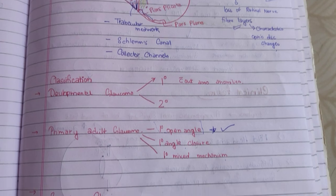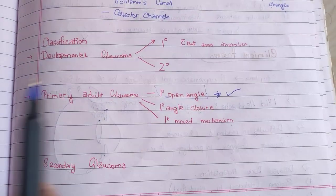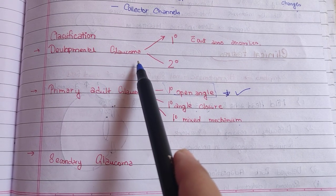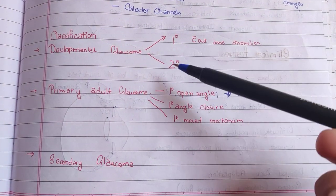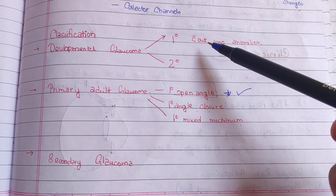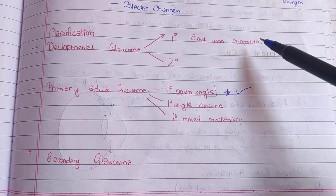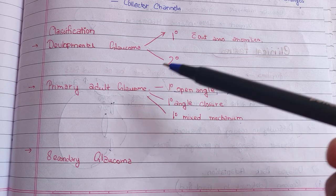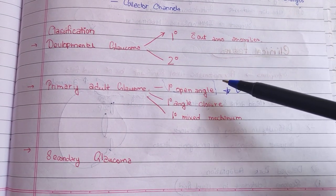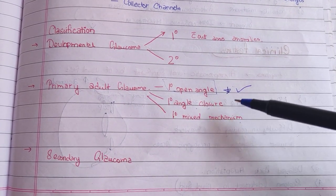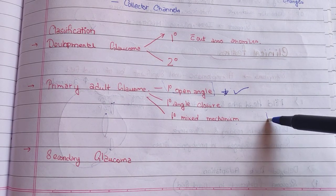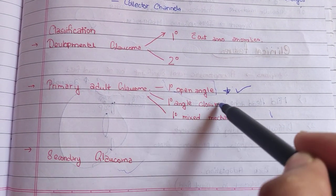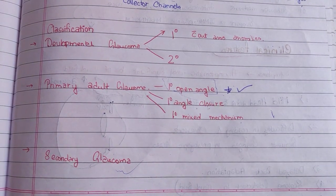Now let us look at the classification of glaucoma. First is developmental glaucoma, which is of two types: primary and secondary. Primary is not associated with any underlying anomalies. Primary adult glaucoma has three types: primary open angle glaucoma, primary angle closure glaucoma, and primary mixed mechanism glaucoma. The last type is secondary glaucoma. In this lecture, we are going to focus upon primary open angle glaucoma.